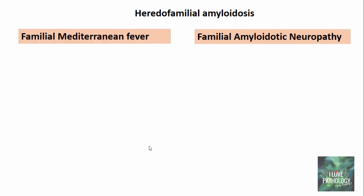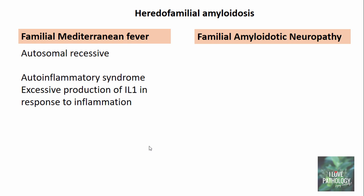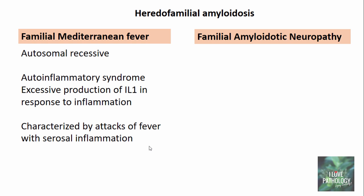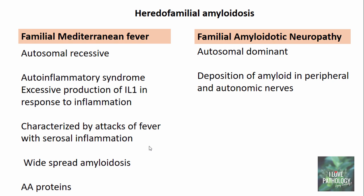Heredo-familial amyloidosis has two major types: familial amyloidotic neuropathy and familial Mediterranean fever. Familial Mediterranean fever is an autosomal recessive auto-inflammatory syndrome with excessive production of interleukin-1 in response to inflammation, characterized by repeated attacks of fever with serosal inflammation such as pericarditis, peritonitis, and pleuritis. It is associated with widespread amyloidosis with AA fibril proteins, as SAA is increased due to excessive interleukin-1, which drives increased hepatic production of SAA. Familial amyloidotic neuropathy is an autosomal dominant condition with deposition of amyloid in peripheral and autonomic nerves, where the fibrils are made up of mutant transthyretins.